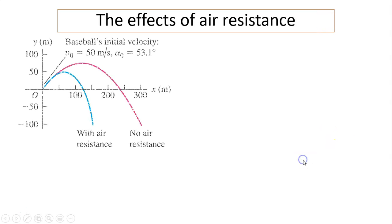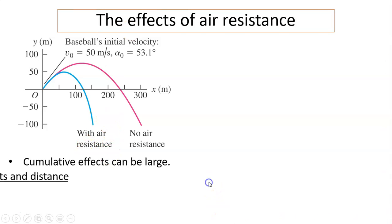The effect of air resistance. The purple shape is the path, the parabolic path, with no air resistance. The blue one is with air resistance. As you can see, cumulative effect can be large. Both the height, maximum height and horizontal distance decreases.